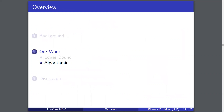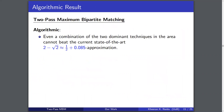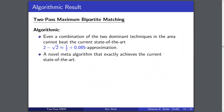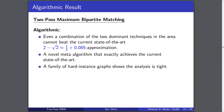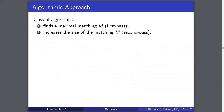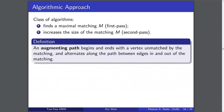Now moving on to the algorithmic front. We combine the two dominant techniques in the area and find a novel meta-algorithm that achieves exactly the current state of the art. We show that the analysis is in fact tight by constructing a family of hard-instance graphs. Our algorithm falls into this class where we first find the maximal matching and then increase its size in the second pass by finding augmenting paths.